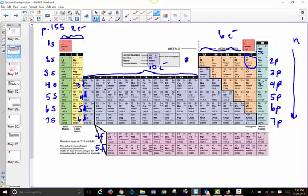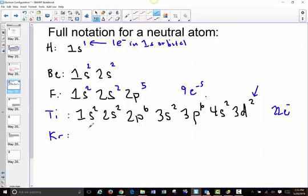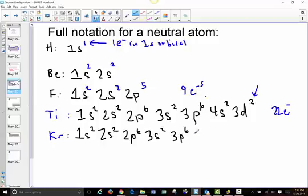Let's go ahead and write out the electron configuration for a krypton atom. So we're starting with 1s full, so 1s², 2s², 2p⁶, 3s², 3p⁶, 4s², this time for krypton 3d is full so it has 10 electrons, and then we're moving into the 4p orbitals and they are full with 6 electrons.